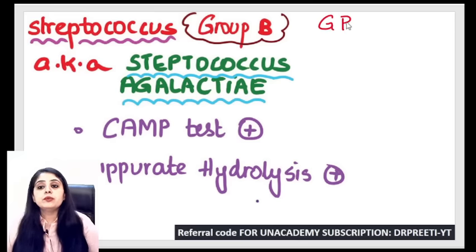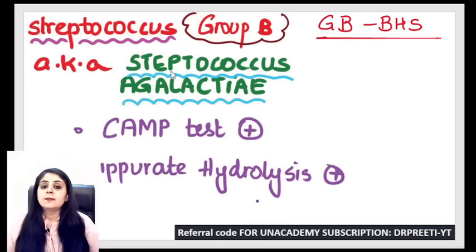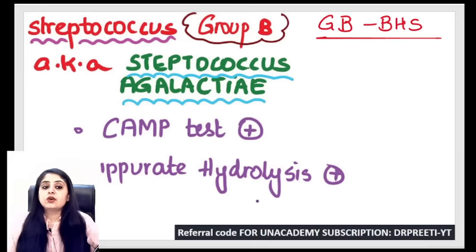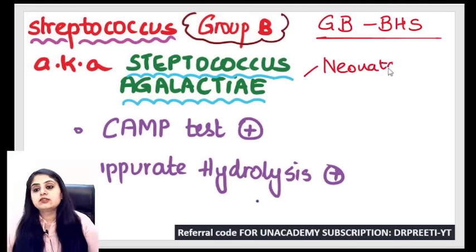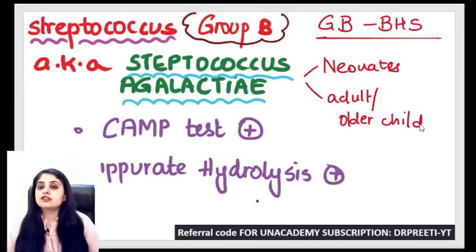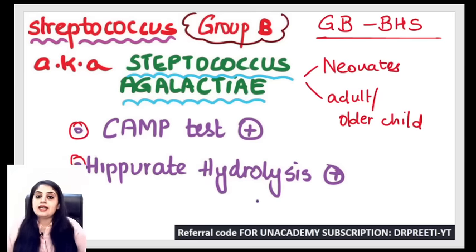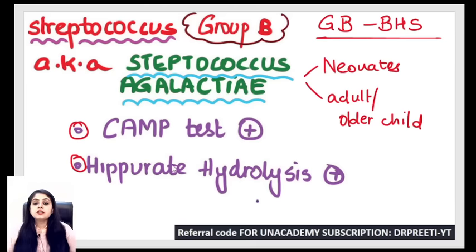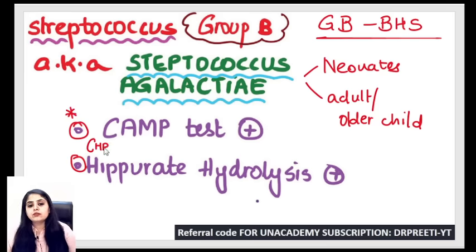Group B beta-hemolytic Streptococcus is Streptococcus agalactiae. It can affect neonates and older children, causing meningitis and pneumonia. Two important tests for agalactiae: CAMP test positive and Hippurate hydrolysis positive. For the CAMP test — CAMP stands for Christie-Atkins-Munch-Peterson. What you need to know: on a blood agar, a vertical streak of Staphylococcus aureus is made, and the patient sample is streaked perpendicularly.